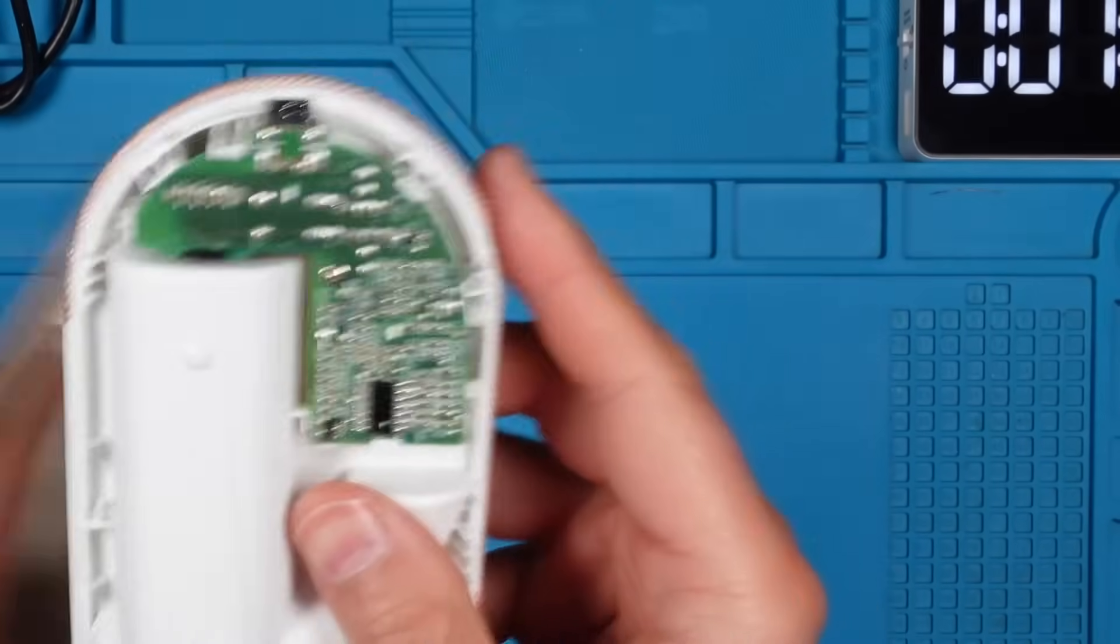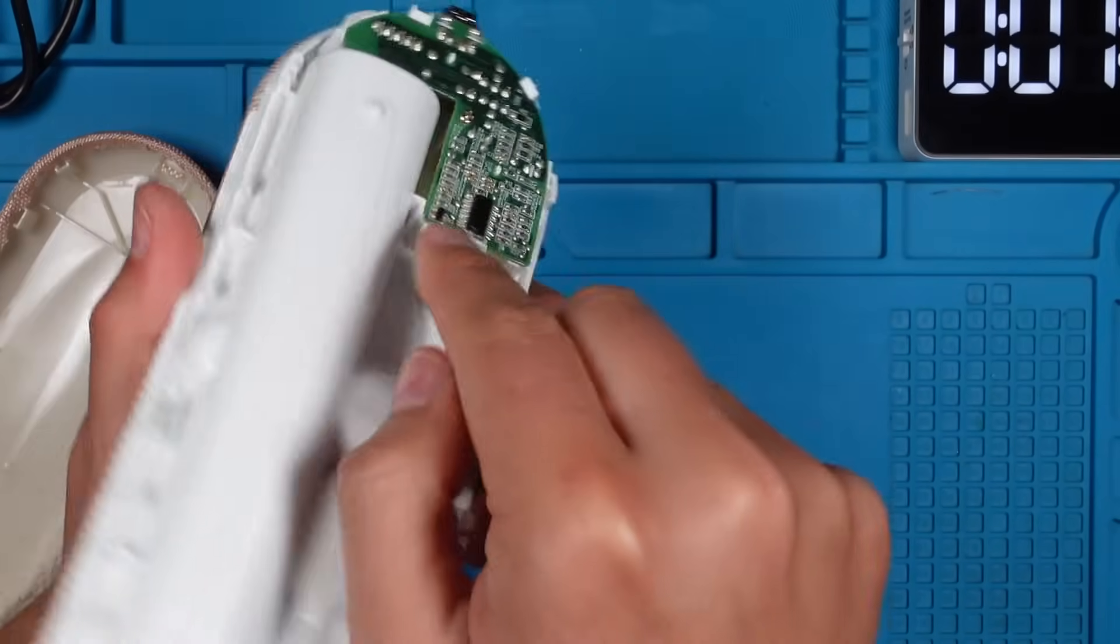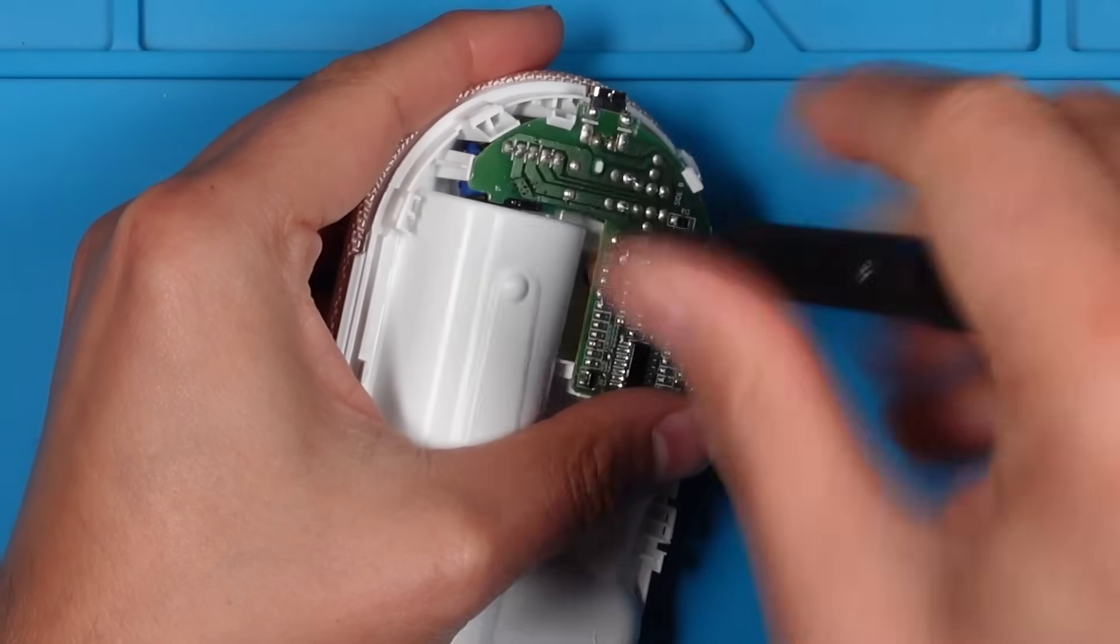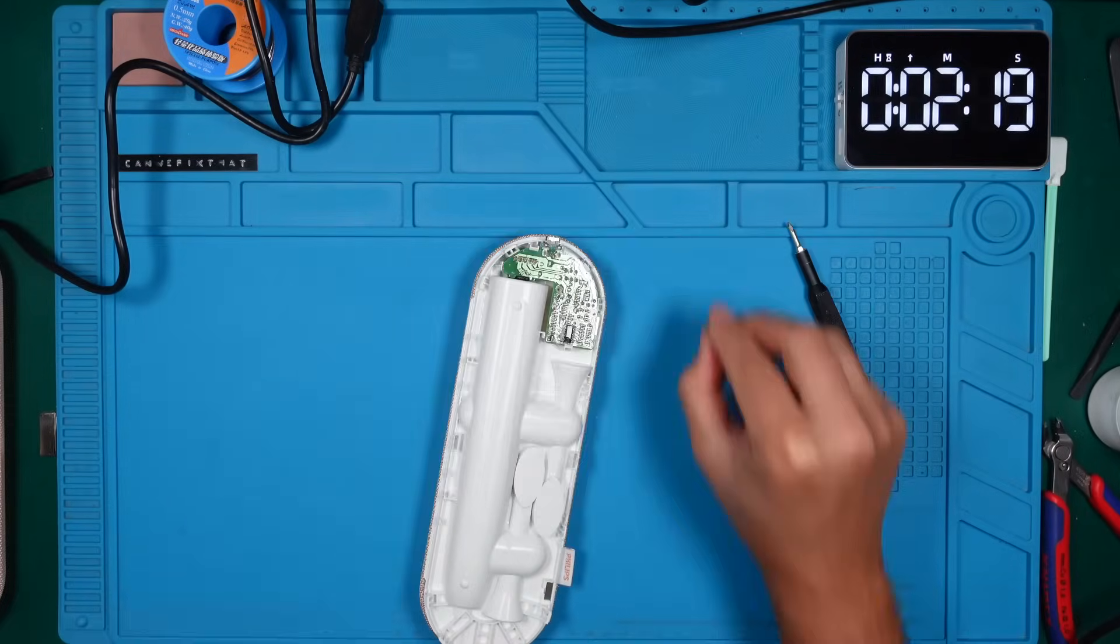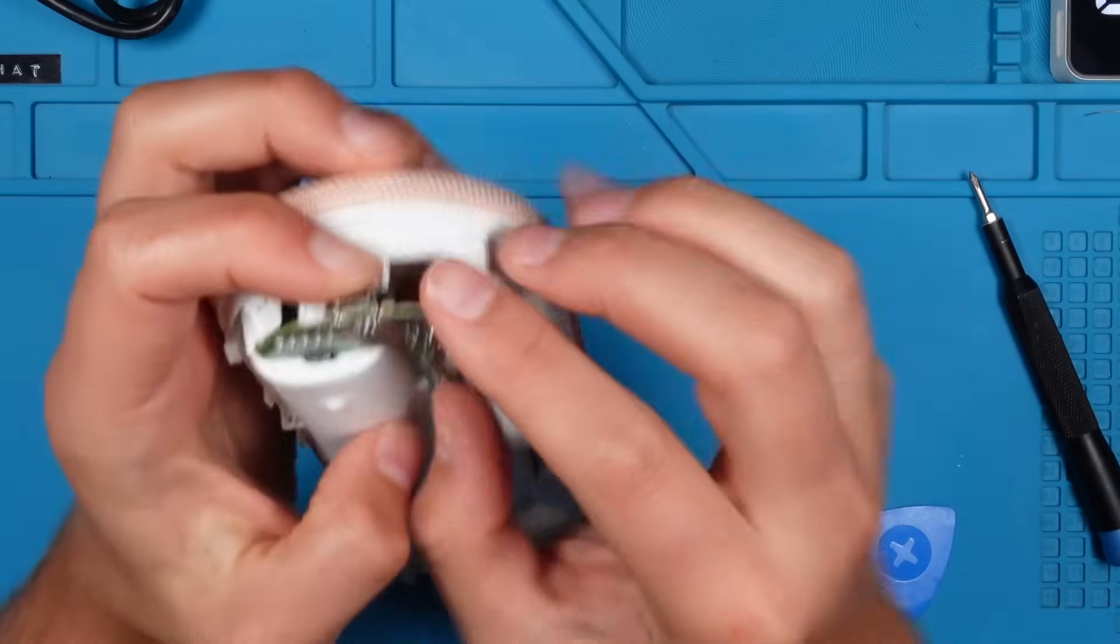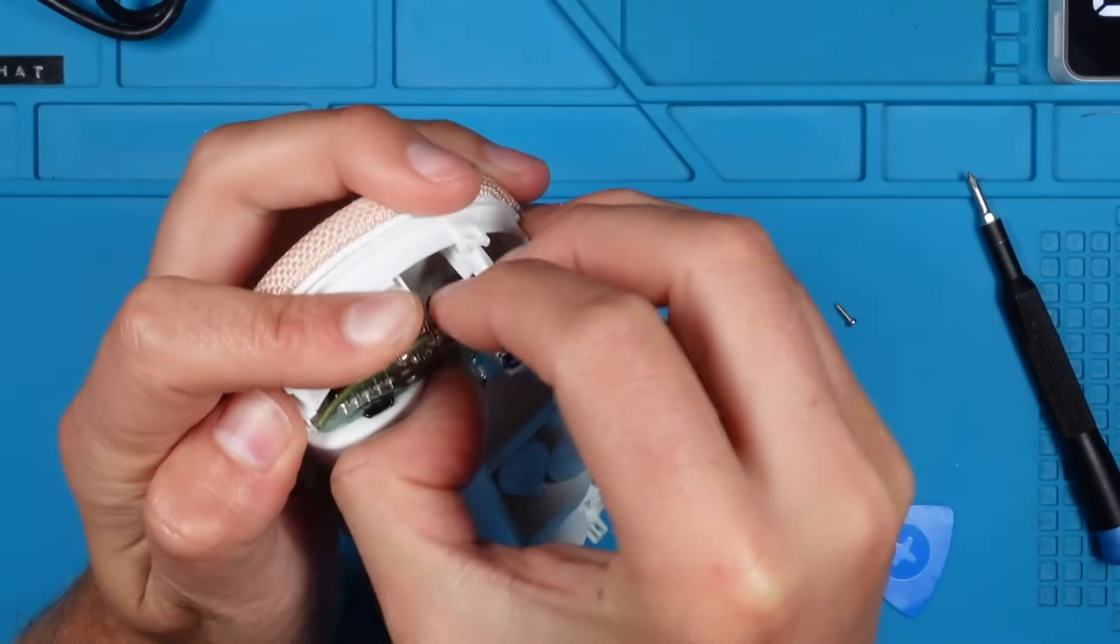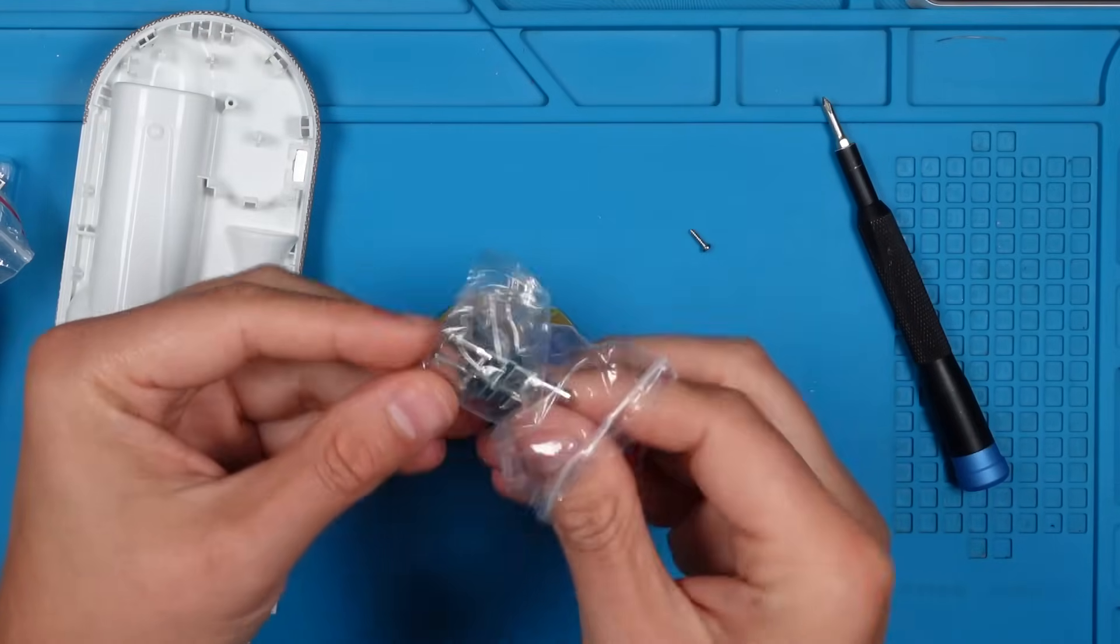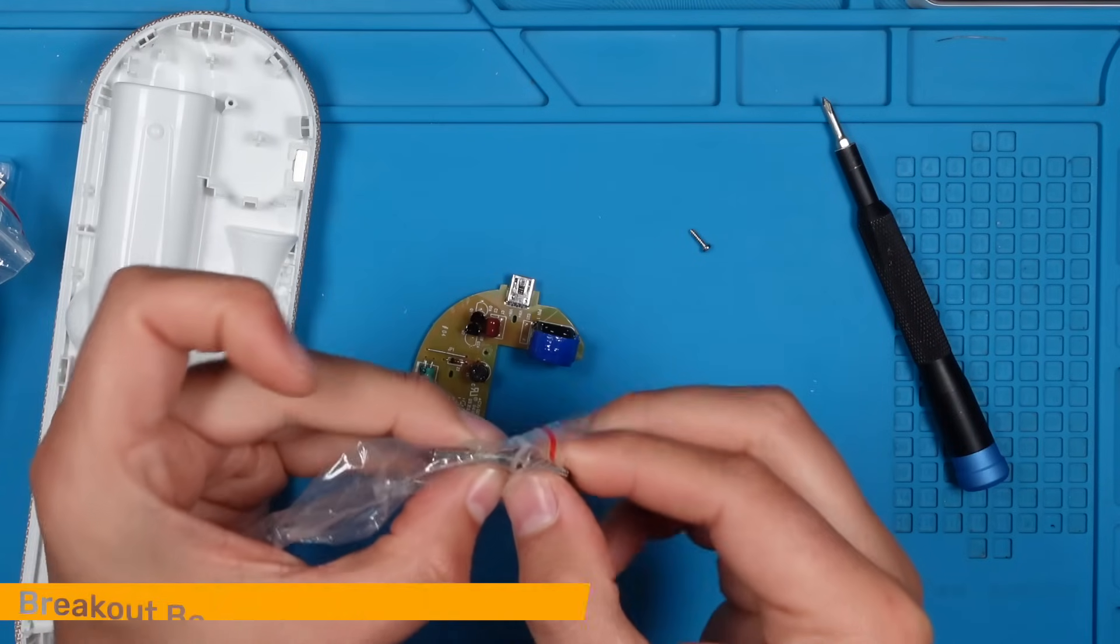Here we see the PCB of the charging circuit. To remove it, we unscrew the only screw we see. Now we lift it out of the case. To replace the old connector, we use this handy USB-C breakout board.